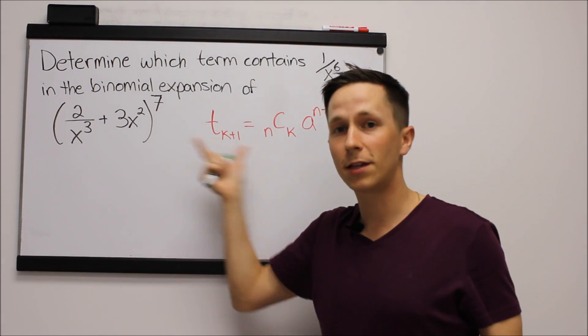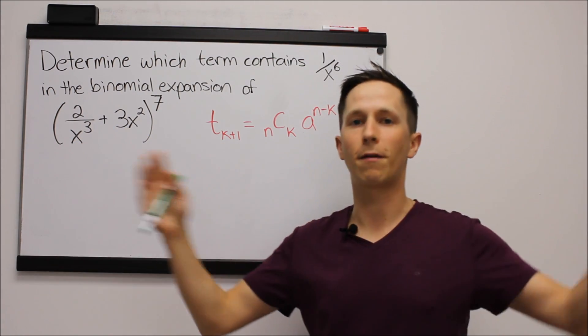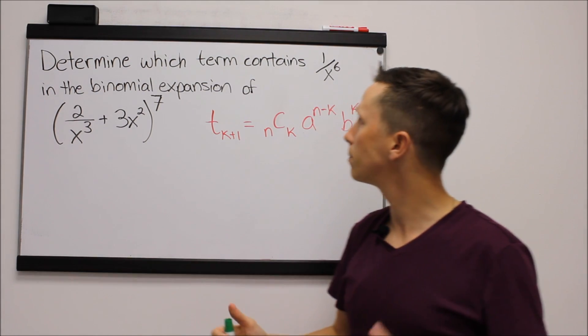The expansion just means you can imagine we write seven of these brackets out in a row, multiply them all out, and we'd have this big mess of eight different terms.